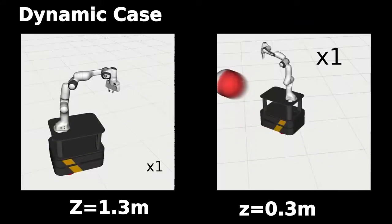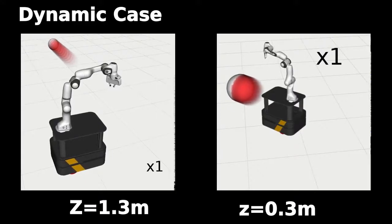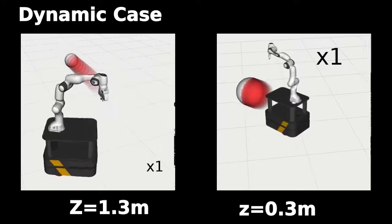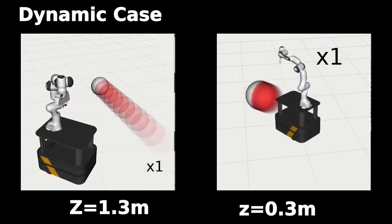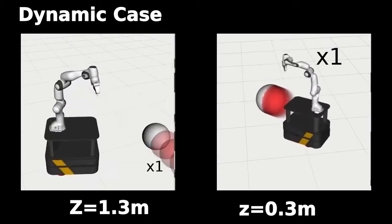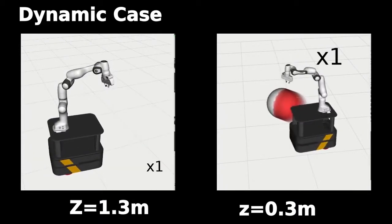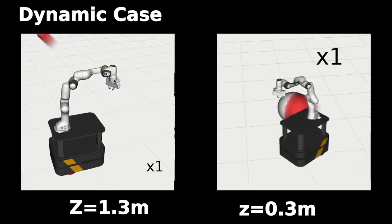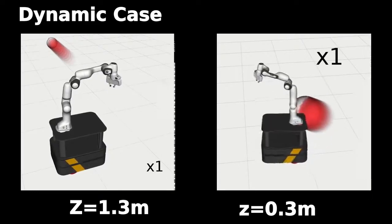Moving obstacles are represented by englobing spheres for which we apply the linear model to predict their future positions. The robot safely avoids collision with the moving obstacles by either moving the base, the arm, or both components simultaneously depending on the obstacle's velocity, size and height.